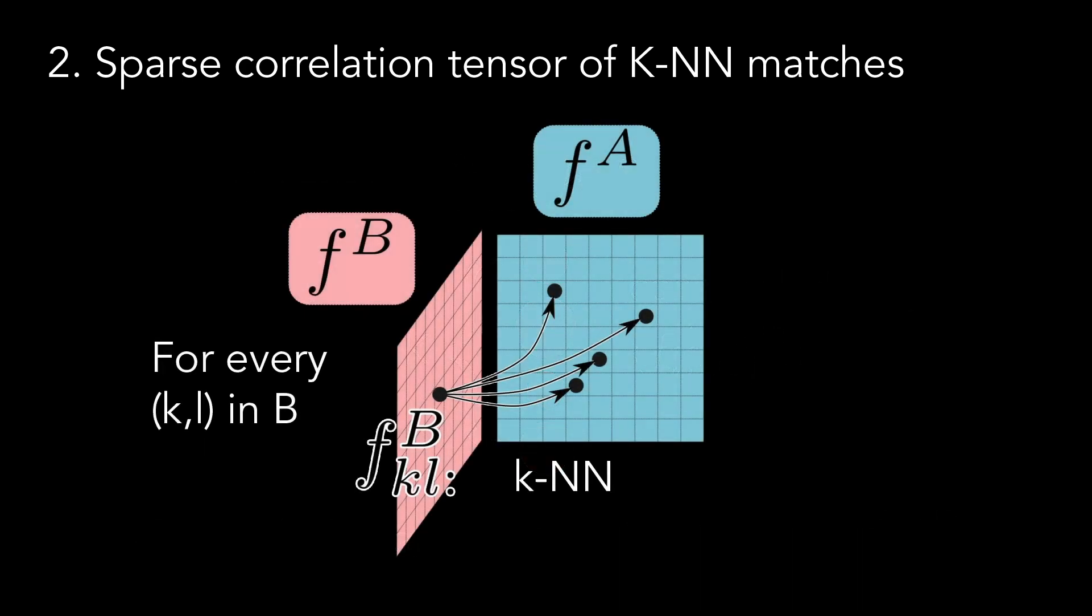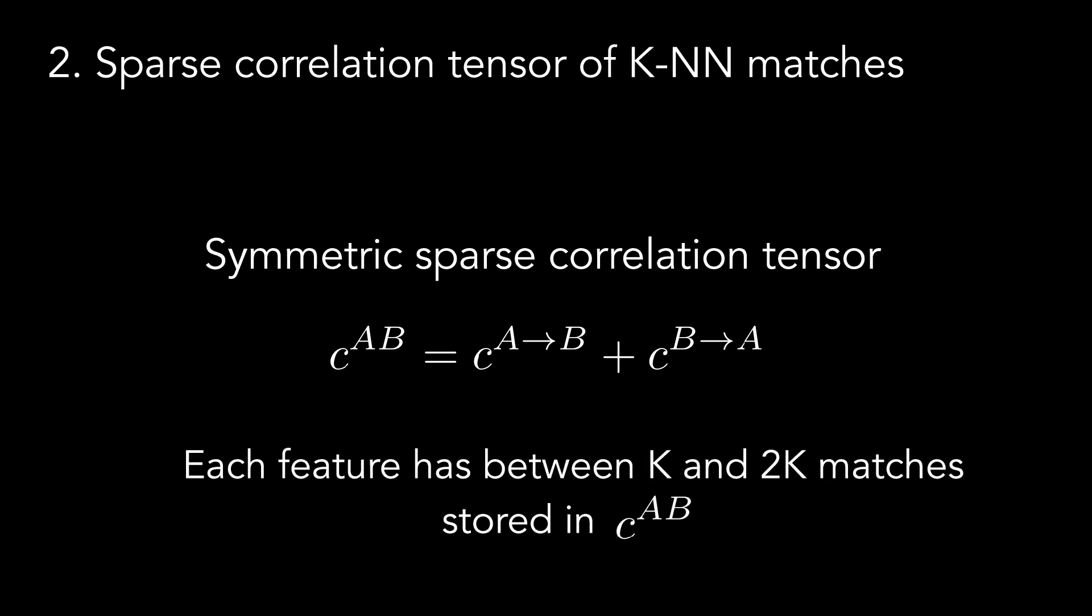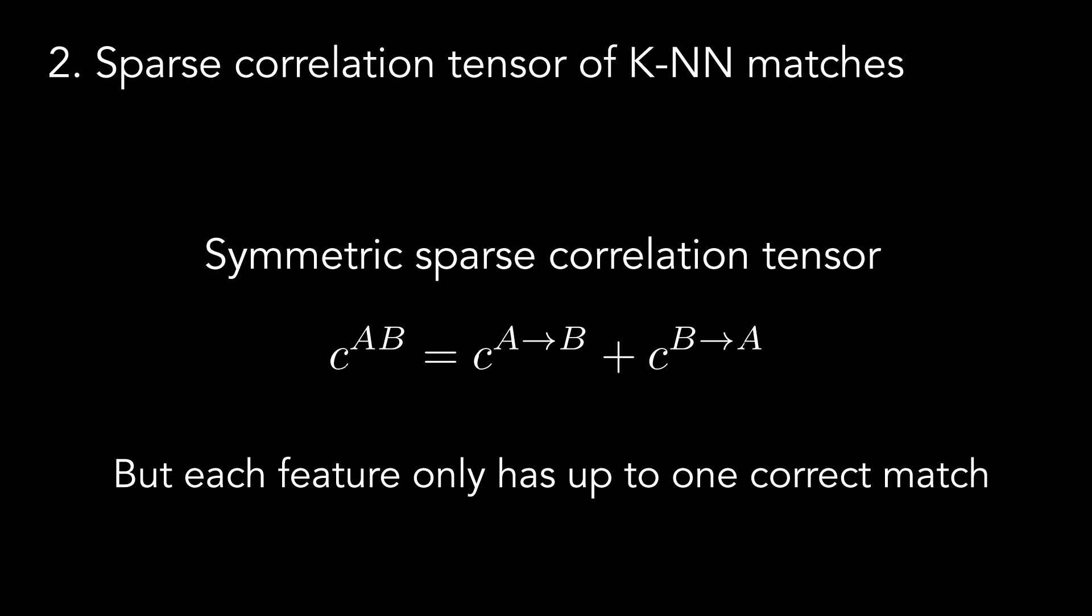The same procedure can be repeated, changing the matching direction, and finding the top k matches in A for every feature in B. These values are stored in a different one-sided 4D sparse tensor. The final symmetric sparse correlation tensor, containing matching coordinates and scores in both matching directions, is obtained under the sum of the two one-sided tensors. Note that each feature has between k and 2k tentative correspondences stored in the sparse correlation tensor. Because there can only be up to one correct correspondence, the sparse correlation tensor needs to be filtered, so that the most promising correspondences are retained, while the least promising ones are rejected.